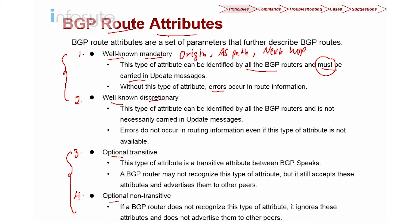Well-known discretionary means this type of attribute can be identified by all routers but is not necessarily carried in every update. Examples of well-known discretionary include local preference and atomic aggregate.